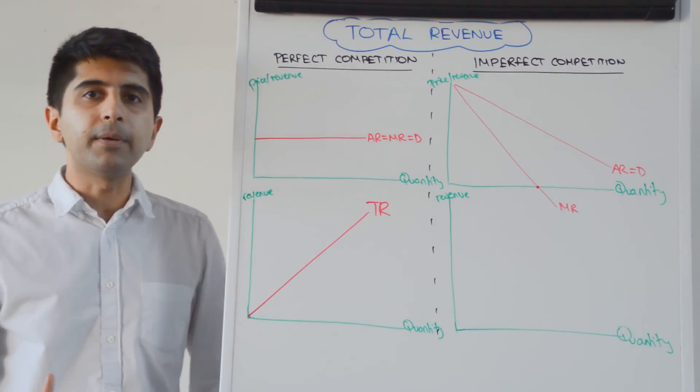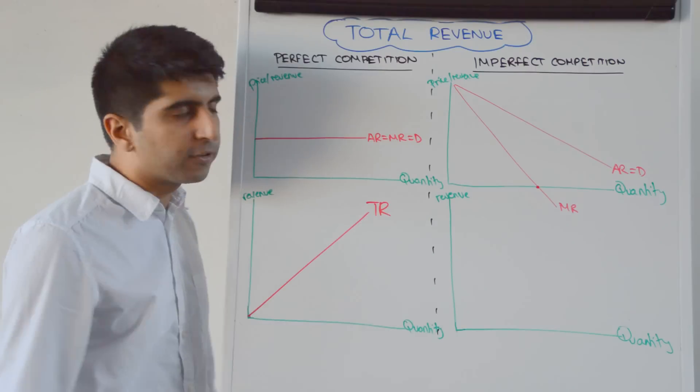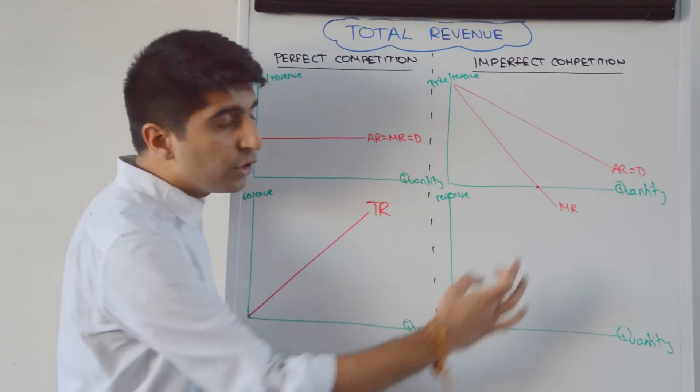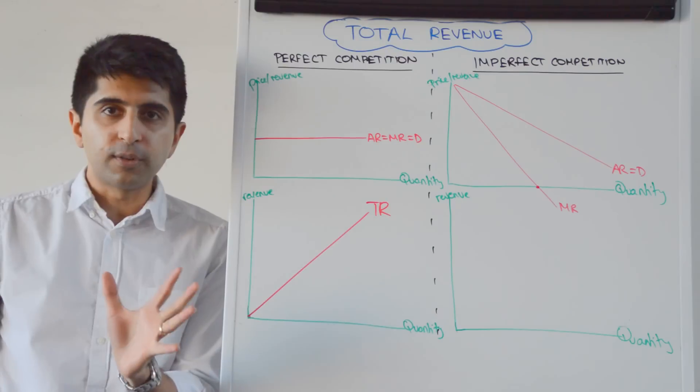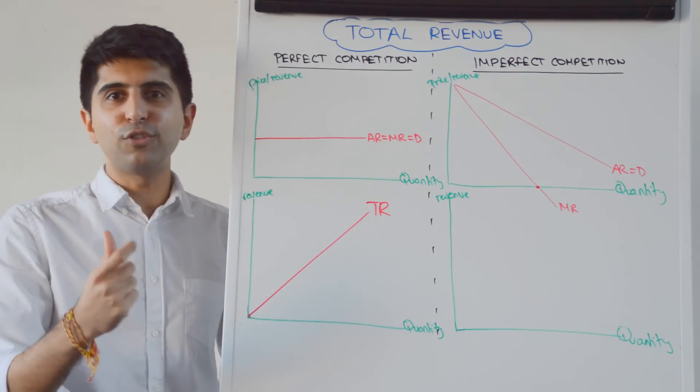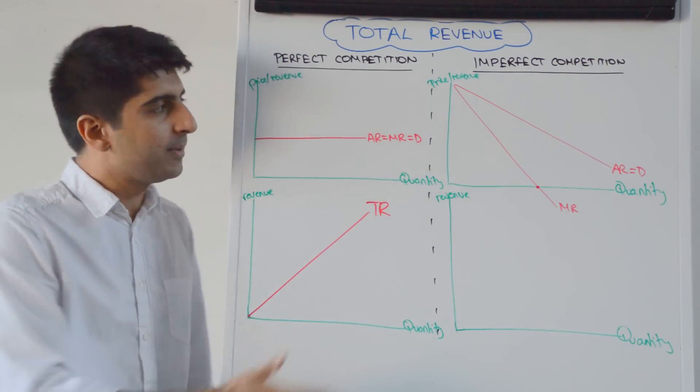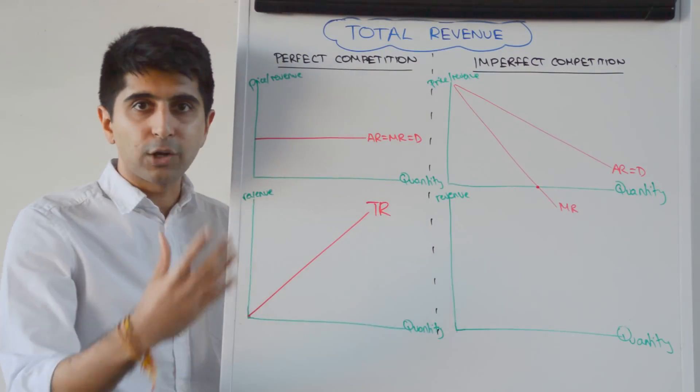It's downward sloping given the price-making nature of these firms like monopolists, for example. MR is twice as steep as AR and also downward sloping. That's based on the idea that for firms to sell extra units of quantity, they need to reduce the price, not just of the extra unit that they want to sell, but of all units that preceded that as well, which means marginal revenue will drop at a quicker rate.